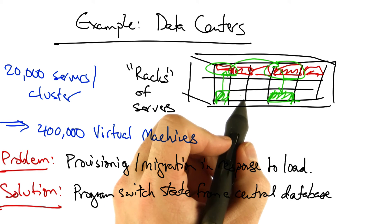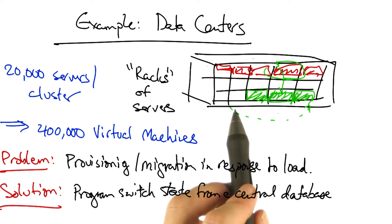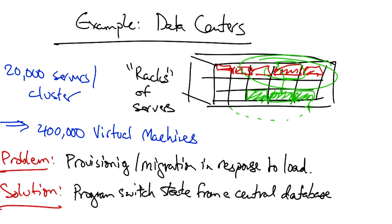If we need to provision additional virtual machines or migrate a virtual machine from one server to another in the data center, the state in these switches must be updated. Updating the state in this fashion is much easier to do from a central controller or a central database.